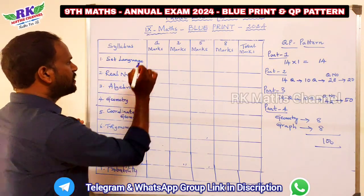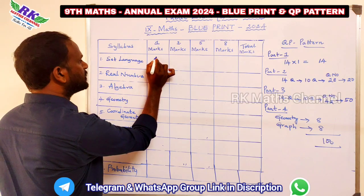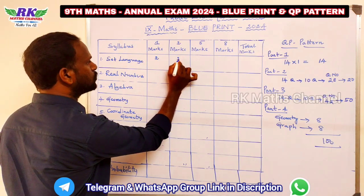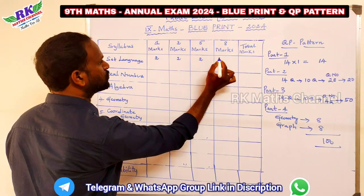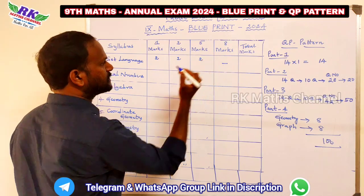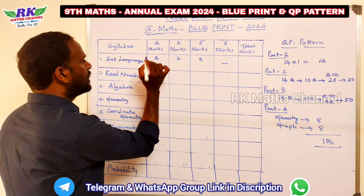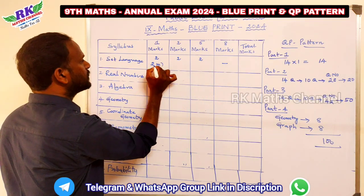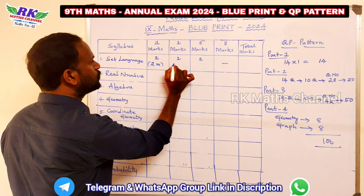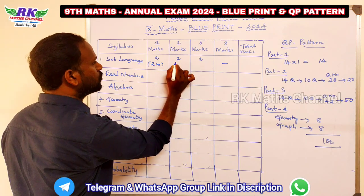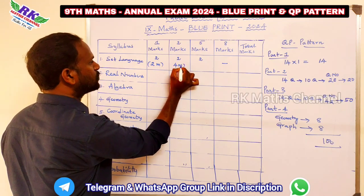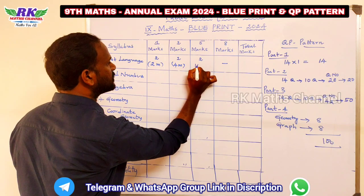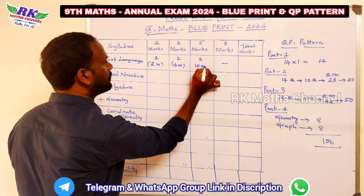The first lesson is Set Language: 1 mark — 2 questions; 2 marks — 2 questions; 5 marks — 2 questions; totaling around 10 marks for this chapter.